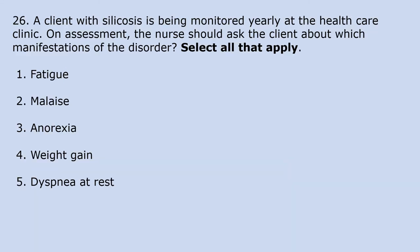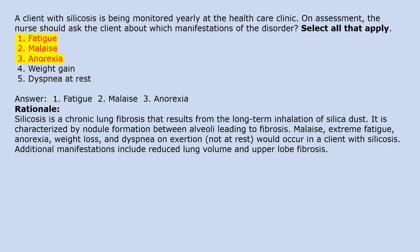A client with silicosis is being monitored yearly at the healthcare clinic. The nurse should ask the client about which manifestations of the disorder? Select all that apply. 1. Fatigue. 2. Malaise. 3. Anorexia. 4. Weight gain. 5. Dyspnea at rest. Answer: 1. Fatigue, 2. Malaise, 3. Anorexia. Rationale: Silicosis is a chronic lung fibrosis resulting from long-term inhalation of silica dust. It is characterized by nodule formation between alveoli leading to fibrosis, malaise, extreme fatigue, anorexia, weight loss, and dyspnea on exertion — not at rest. Additional manifestations include reduced lung volume and upper lobe fibrosis.